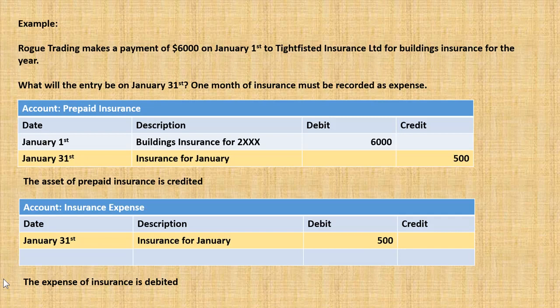At the end of January, we've used one month's worth of insurance, so we've got to expense that insurance. It was six thousand dollars for the year — that's five hundred dollars per month. So on January the 31st, we credit the prepaid insurance account with five hundred dollars, representing the portion of the asset used, and we debit the insurance expense account with five hundred dollars for January.